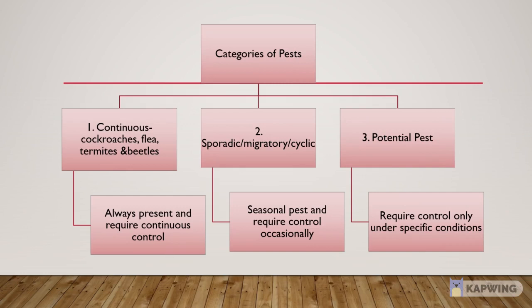Now we will discuss the categories of pests. There are three categories. Number 1: Continuous pests. These include cockroaches, fleas, termites and beetles. They are always present in our surroundings and require continuous control. Number 2: Sporadic, migratory or cyclic pests. They are seasonal pests and require control occasionally as they die after the specific season. Number 3: Potential pests. They require control only under specific conditions if their population grows beyond the threshold point, because they do not cause significant harm to humankind and animals.